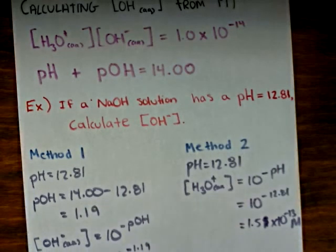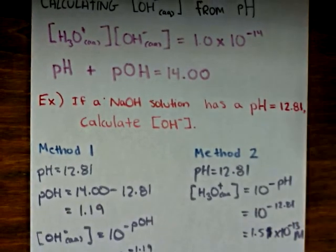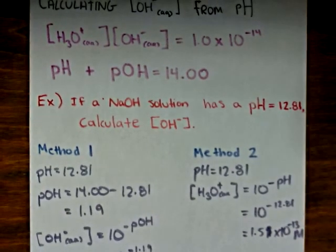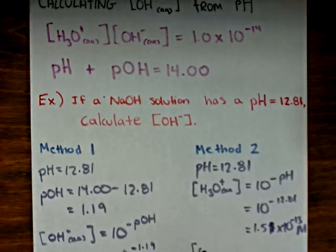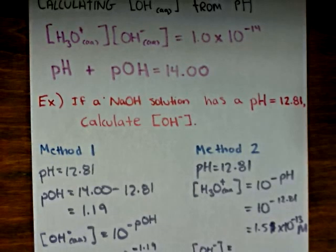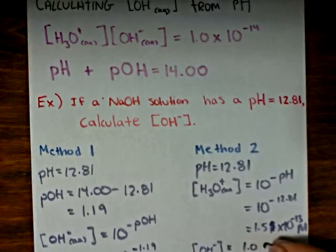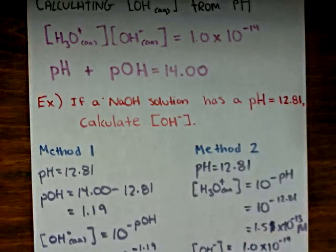Then we can use the first expression that we wrote at the top to solve for the hydroxide ion concentration. The hydroxide ion concentration will be equal to 1.0 times 10 to the negative 14 divided by the hydronium ion concentration, which we just calculated above, to be 1.5 times 10 to the negative 13.